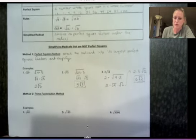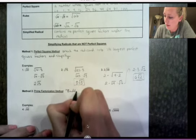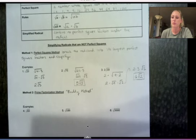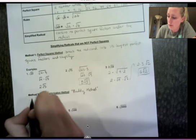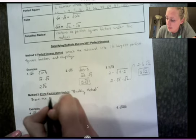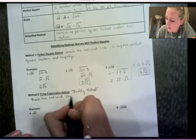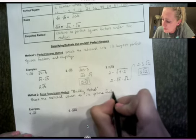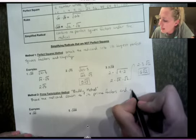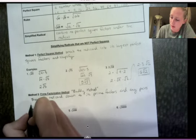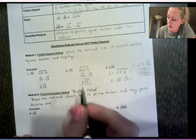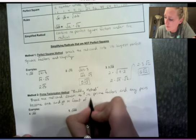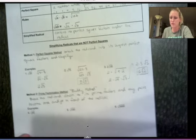Okay, this one is called the prime factorization method. I like to also call this one the buddy method. So this one, I don't necessarily have to look for a perfect square. I am going to look for pairs, okay, or buddies. So we are going to break the radicand down to its prime factors. And any pairs become 1 and go in front of the radical.